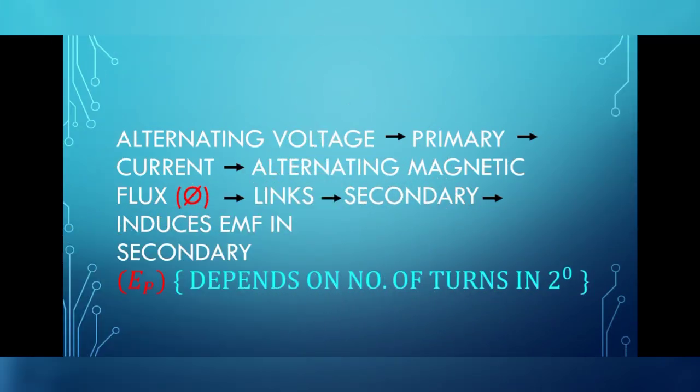Now let us see the working of a transformer. When an alternating voltage is applied to the primary coil, a current is produced in it. This produces an alternating magnetic flux around it, which links the secondary coil. Thus, it produces an induced EMF in the secondary coil, which is represented as EP. EP depends on the number of turns in the secondary coil.